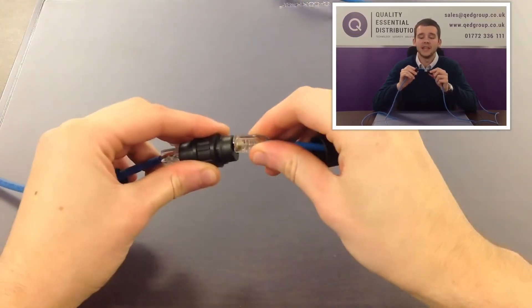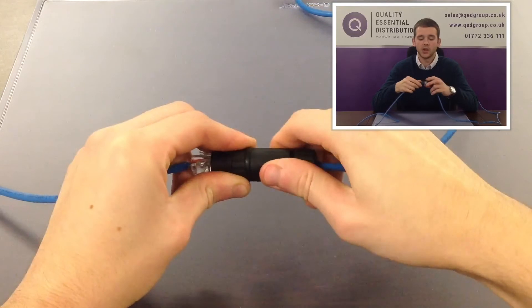We then have an M16 inline coupler which simply twists over the top.